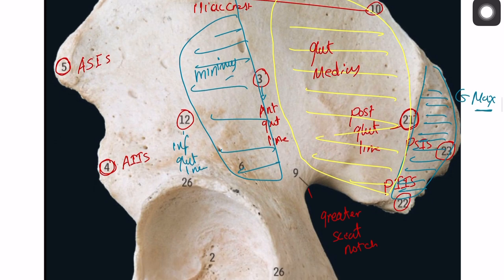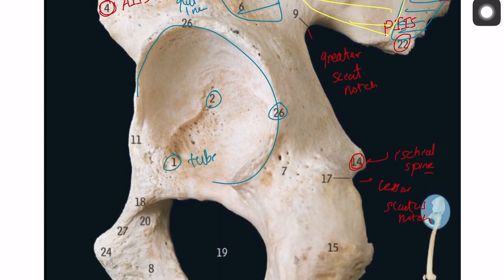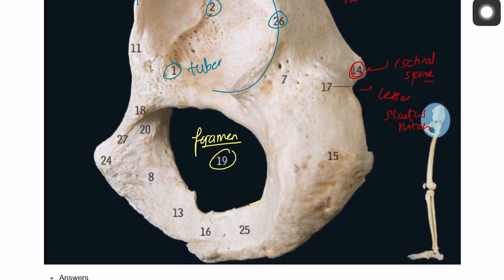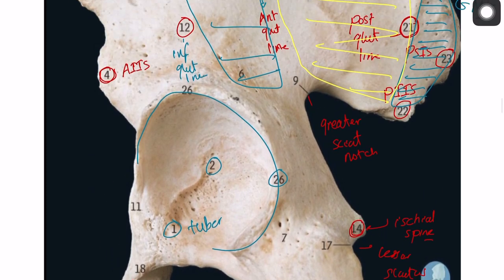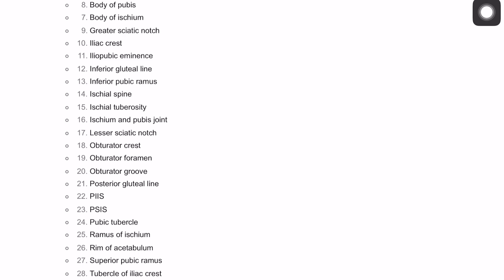On the outer surface: number 2 is the acetabulum, number 26 is the acetabular rim, number 1 is the acetabular tubercle, number 19 is the obturator foramen, the ischial spine is visible, the ischial ramus and pubic ramus come together to form a joint, the pubic tubercle and pubic crest are identified. This concludes the structures of the hip bone — we'll continue with muscles in the next video.